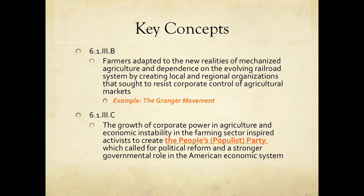Key Concept 6.1, Roman numeral 3, letter C is the gist of this lecture. The growth of corporate power in agriculture and economic instability in the farming sector helped inspire individuals — after the failure of the Granger — to come together and create their own political party known as the People's Party, which we've come to know as the Populist Party. Let's get into how this happens.